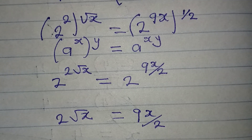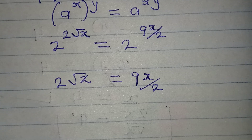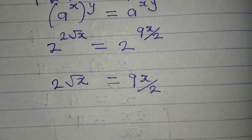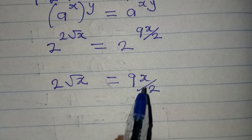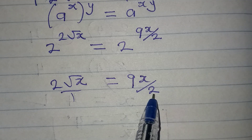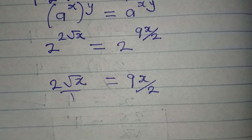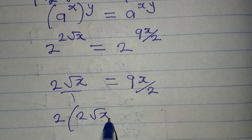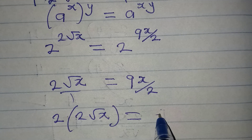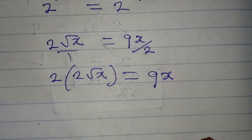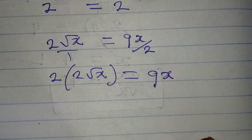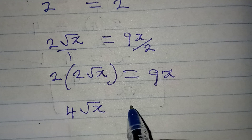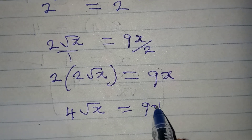Now what should I do? Somebody will be thinking that this 2 can cancel that 2, but the answer is no — it can't cancel, because if you cross multiply, this 2 will multiply everything on this side. So multiply both sides by 2: 2 times 2 root x equals 9x times 1, which would be 9x. Then we have 4 root x equal to 9x.